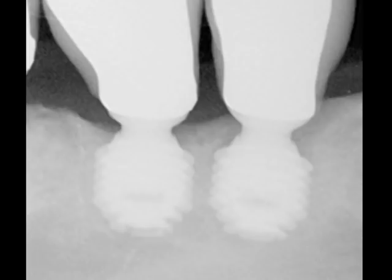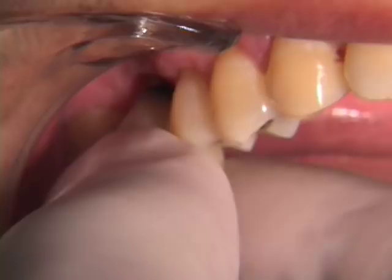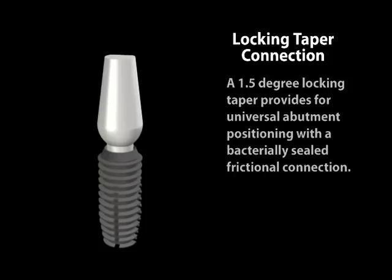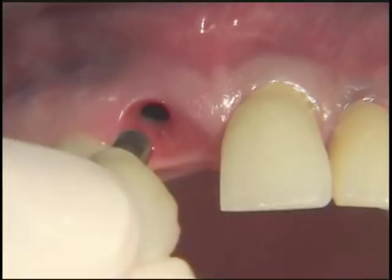Many of Bicon's beneficial restorative attributes, such as the extra-oral cementation of crowns and the Bicon Integrated Abutment Crown, are directly related to the implant's elegant design with a 1.5-degree locking taper connection, which provides for 360 degrees of universal abutment positioning. Hopefully, with the depicted techniques, you will enjoy the benefits of the Bicon system, such as never again having to apologize to your patients for a dark metallic gum line.